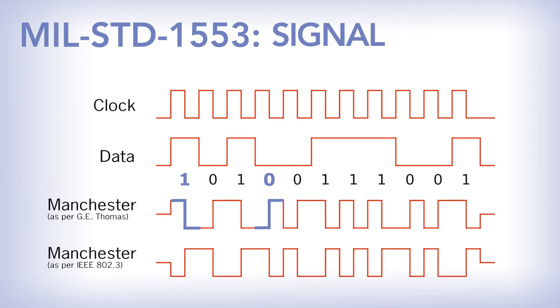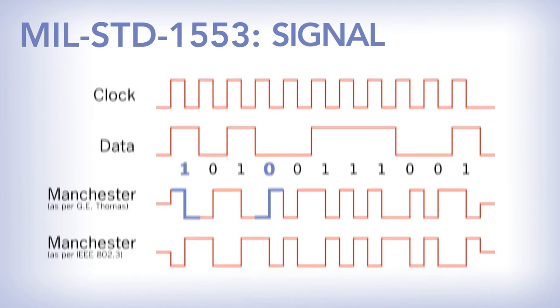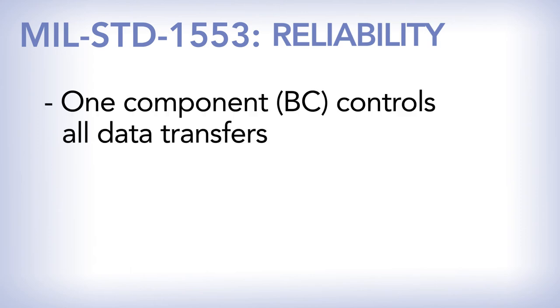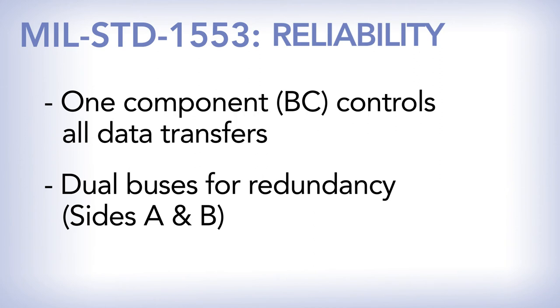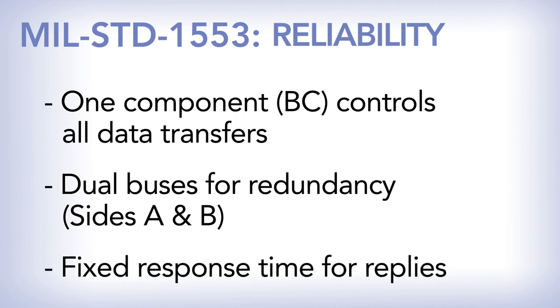All this adds up to an avionics bus renowned for its simplicity and reliability. The only component in the 1553 system that controls all data transfers is the bus controller, which is tied to the mission computer. It has dual buses for redundancy and safety — side A and B — and a fixed response time for all replies.